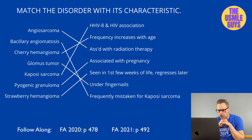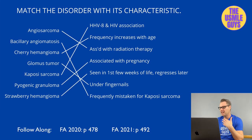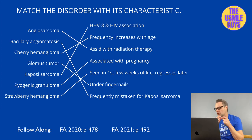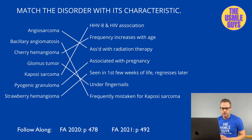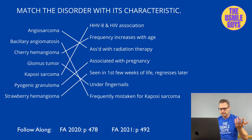Cherry hemangiomas are lesions typically seen in middle-aged adults. While they don't regress, they are benign, and their frequency increases with age. The glomus tumor is a small reddish-blue tumor found under the fingernails. It's benign but painful, arising from modified smooth muscle cells of the glomus body. Don't overlook this one on exam day.